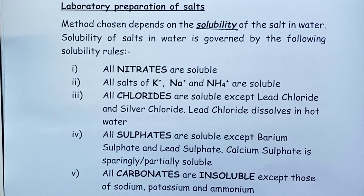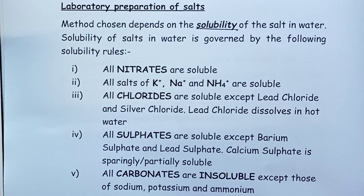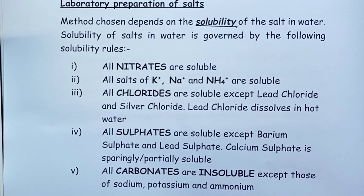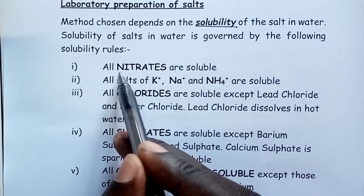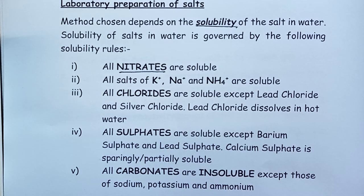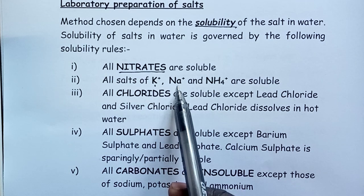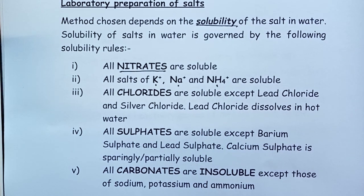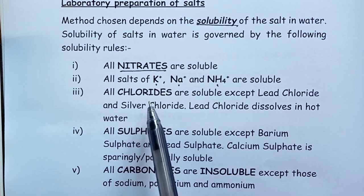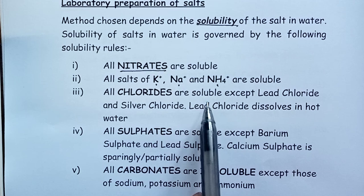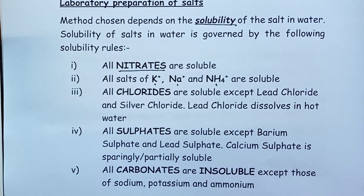The solubility of salts is governed by what we call solubility rules. Rule one: any salt that is a nitrate will dissolve in water. Rule two: all salts containing the potassium ion, sodium ion, and ammonium ion are also soluble. Rule three: chlorides are all soluble, except lead chloride and silver chloride. However, lead chloride will dissolve if placed in hot water.